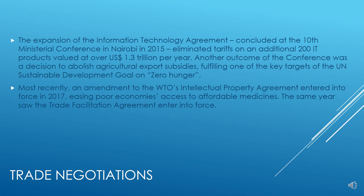The expansion of the Information Technology Agreement, concluded at the 10th Ministerial Conference in Nairobi in 2015, eliminated tariffs on an additional 200 IT products valued at over 1.3 trillion US dollars per year. Another outcome was a decision to abolish agricultural export subsidies, fulfilling one of the key targets of the UN Sustainable Development Goal on zero hunger. Most recently, an amendment to the WTO's intellectual property agreement entered into force in 2017, easing poor economies' access to affordable medicines. The same year saw the Trade Facilitation Agreement enter into force as well.